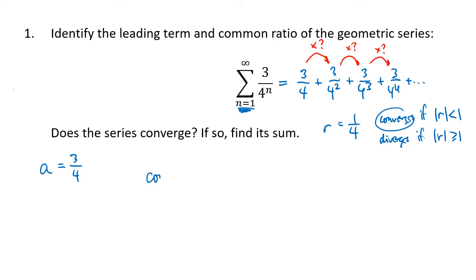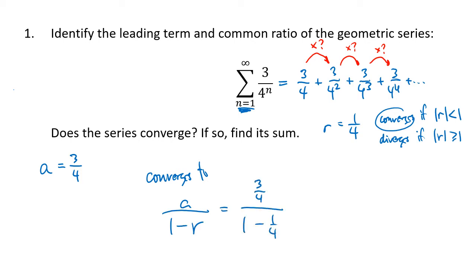It converges to the formula a divided by 1 minus r. So we have 3 fourths divided by 1 minus 1 fourth, which is 3 fourths divided by 3 fourths, also known as 1. So this series converges to the number 1.